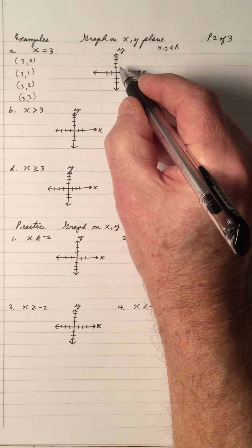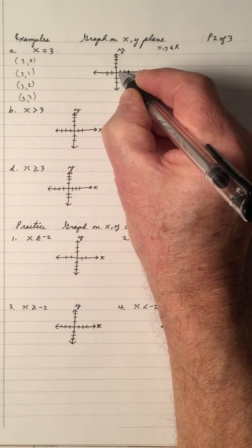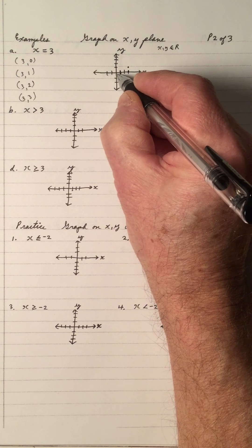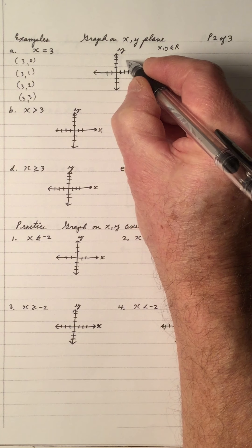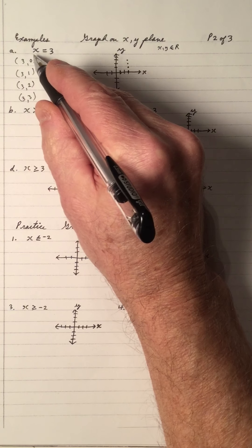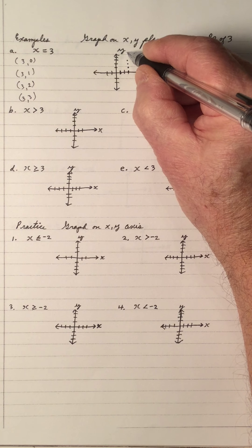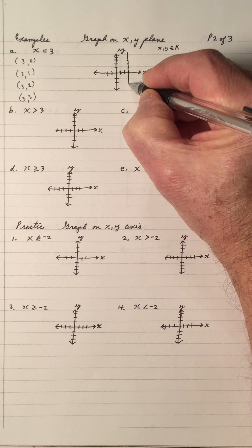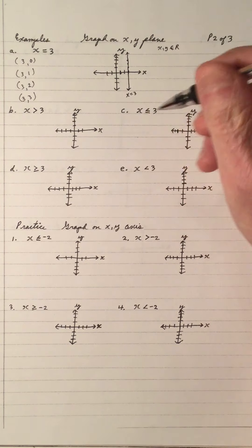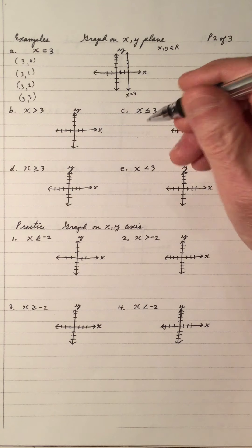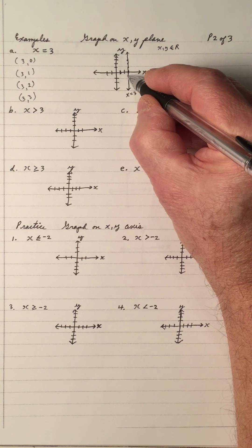Let's plot a few of these points: x is 3, y is 0; x is 3, y is 1; x is 3, y is 2; x is 3, y is 3. Notice that the x coordinate is the same. If you join all the dots up and shade it in, the equal sign x equals 3 could be a boundary line in relation to an inequality — it's a vertical line.